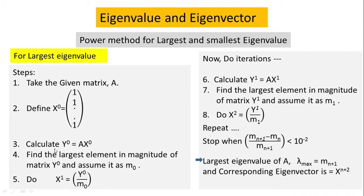Then you have to multiply these two matrices, A and X0, and after multiplying you will get another column matrix which is Y0. In the next step, find out the largest element of Y0 — let's say the largest element is M0. Then you have to divide all the elements of Y0 by the largest element M0, and let's say the result is X1, which is Y0 divided by M0.